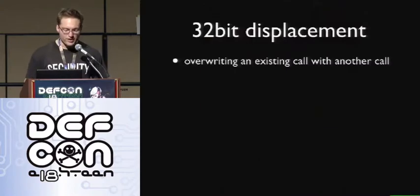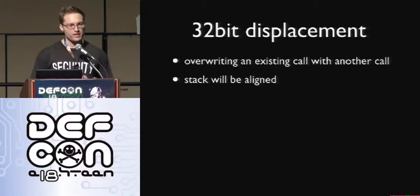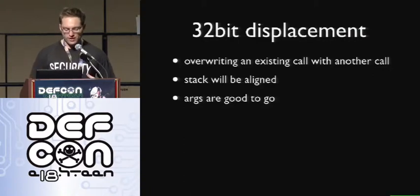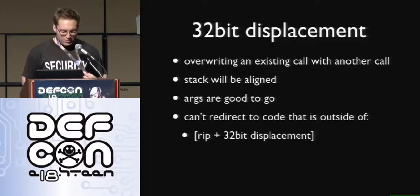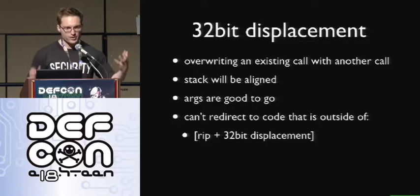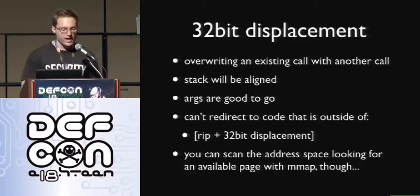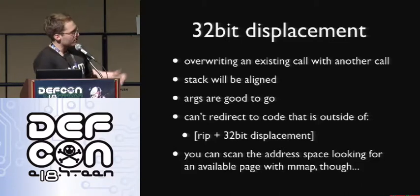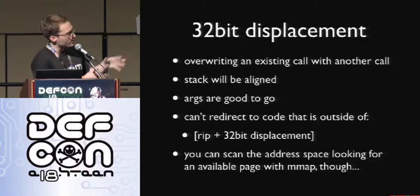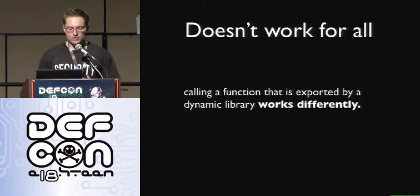It turns out that it's actually a little more tricky. When you're dealing with the 32-bit displacement, overwriting an existing call with another call is fine — the stack will already be aligned and the registers are all fine. But the problem is we can't redirect to code that's outside of the instruction pointer plus the 32-bit displacement window, because we can only put in a 32-bit displacement. If you're redirecting to code that's far away, you get stuck. The only way to get around this is to scan the address space searching for a free slot where you can mmap a page to put in a bunch of code to call. You basically scan the address space calling mmap within that instruction pointer plus 32-bit displacement window.